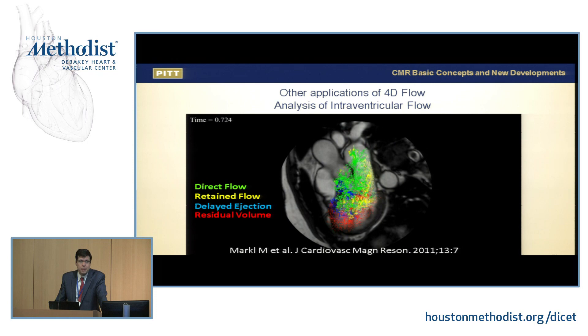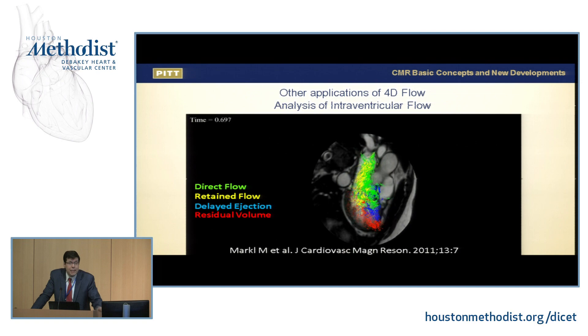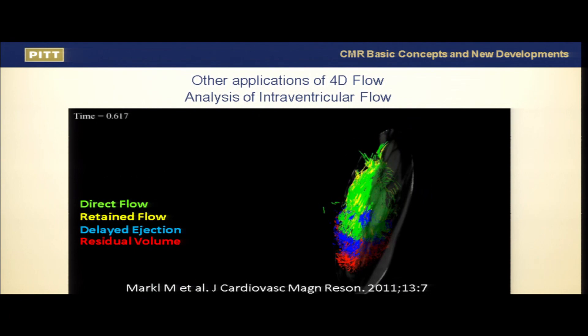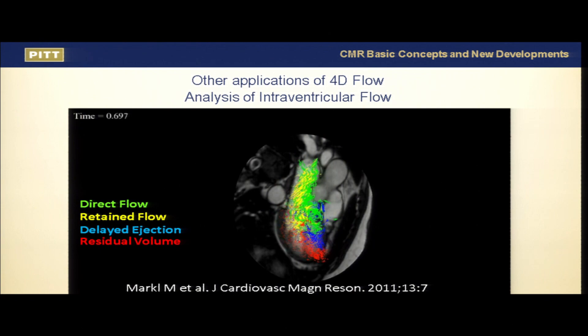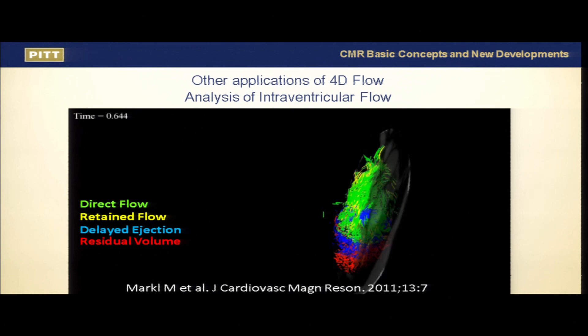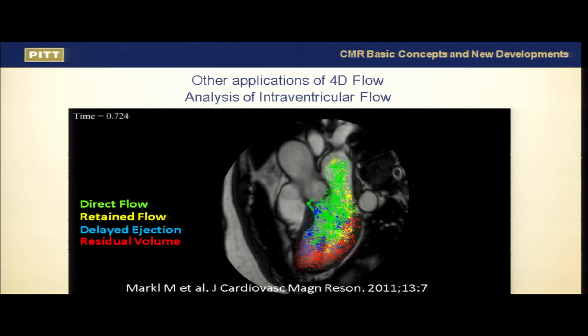Other applications, also reviewed by Mike Markl, are now feasible in echocardiography with the new GE software for blood speckle imaging. These particles allow us to look at direct flow, retained flow, and delayed ejection — giving insights about blood suctioning, potentially diastology, and perturbations of intracardiac blood flow after prosthesis placement. There are many other things we could probe once we optimize not only data acquisition but especially post-processing.